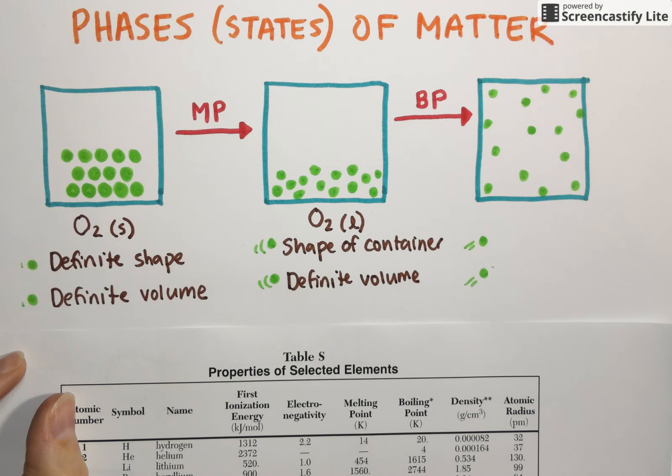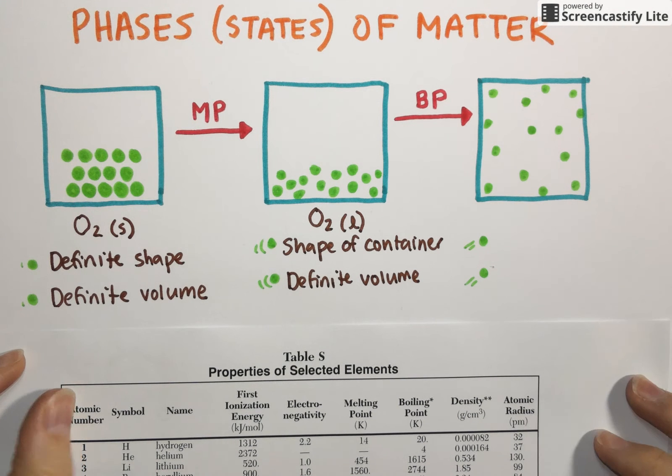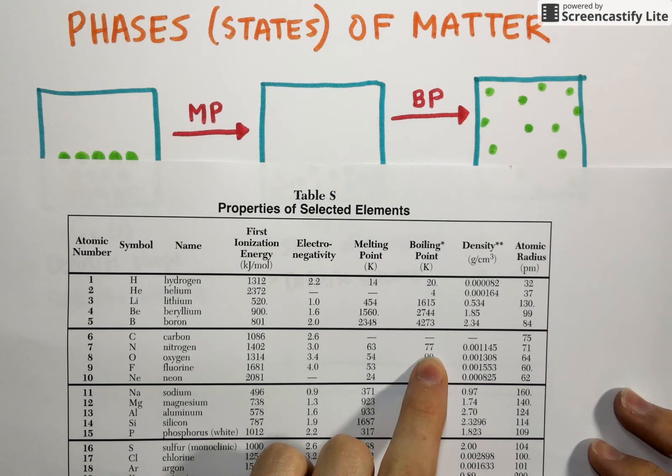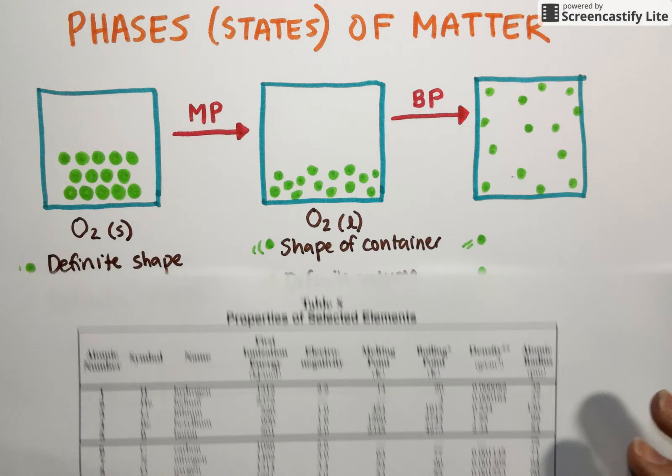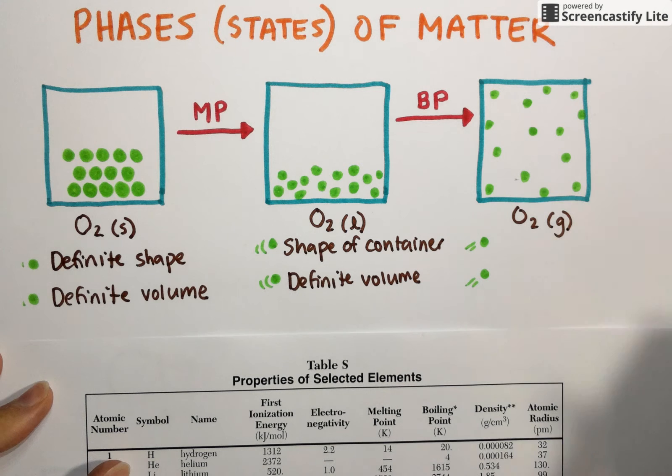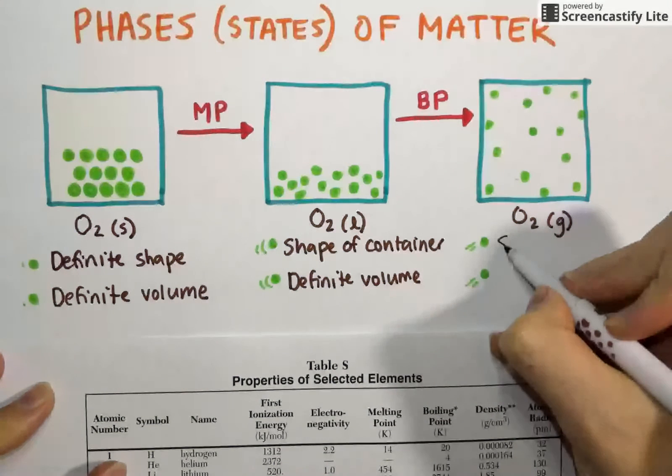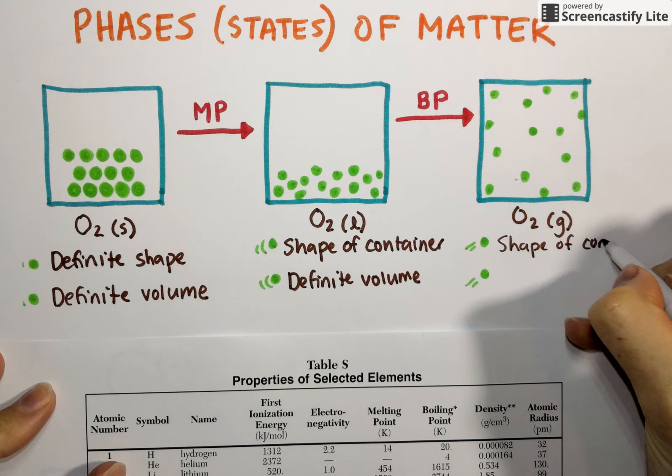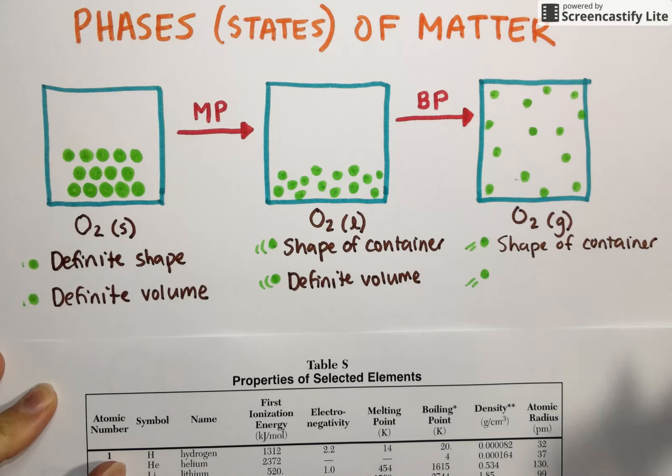If we add a little bit more heat and raise that temperature beyond the boiling point of oxygen, which according to Table S is 90 Kelvin, well below room temperature, we get oxygen in its more standard state as a gas, which we can represent using a lowercase G. All gases take on the shape of their container like liquids.